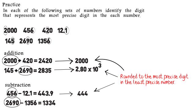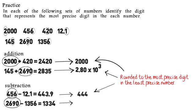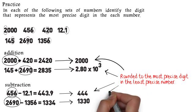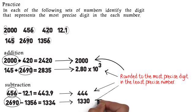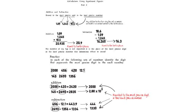Finally, 2690 minus 1356 gives us 1334. The 9 in 2690 determines we round to the tens place, so the answer is 1330. That is the basics of addition and subtraction using significant figures.